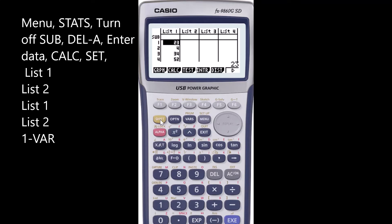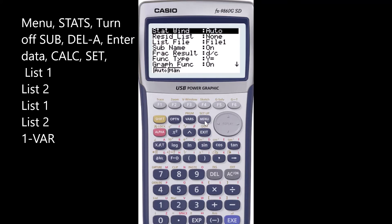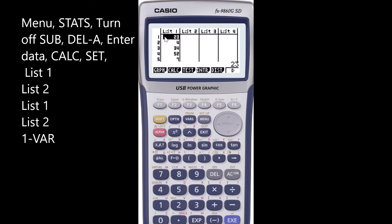To do that, go shift main menu, which gives you the setup. Then scroll down to sub name field. Make sure you turn that off. Click enter and now that has gone.